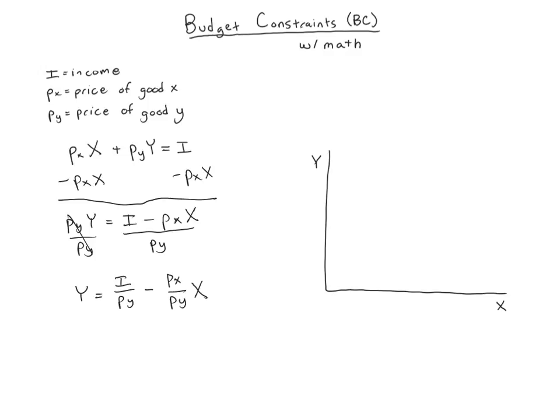So if I plot this, I can see my intercept is going to be I over py, and it's going to have a slope of negative px over py. We'll come back to that point in a second. Then it will have some x-intercept. If you do the algebra, which you can pause the video and verify, you'll get that the x-intercept is going to be I over px.